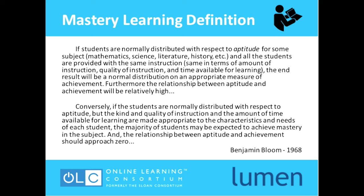Furthermore, the relationship between aptitude and achievement will be relatively high. Conversely, if students are normally distributed with respect to aptitude, but the kind and quality of instruction and the amount of time available for learning are made appropriate to the characteristics and needs of each student, the majority of students may be expected to achieve mastery in that subject, and the relationship between aptitude and achievement should approach zero.